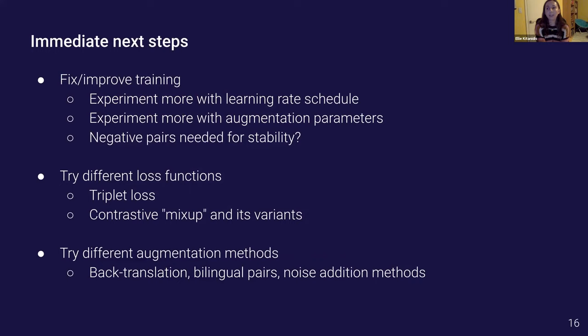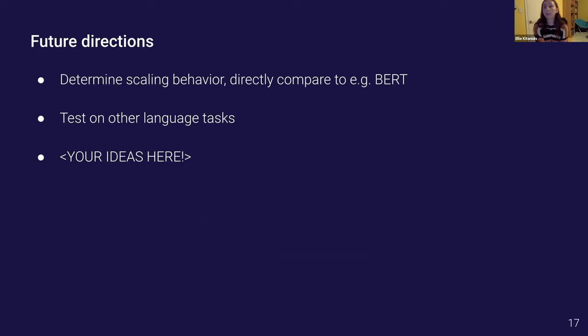Very quickly next steps. Obviously our immediate next steps are to try to improve the training, do a lot more experiments with learning rate parameters and augmentation parameters and maybe expand our scope a little bit in terms of including negative pairs and different types of loss functions, potentially also exploring different augmentation methods that might work better. More broadly if we were to get this type of model to work obviously we would be interested in probing its scaling behavior and also its performance on a wider variety of tasks.